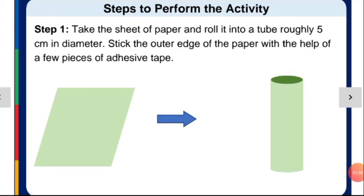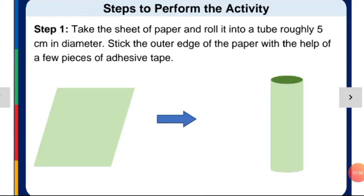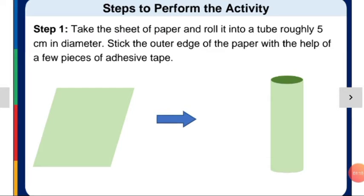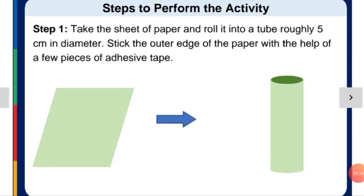Stick the outer edge of the paper with the help of a few pieces of adhesive tape. So first you will make the roll of the paper and stick the edges with the adhesive tape.